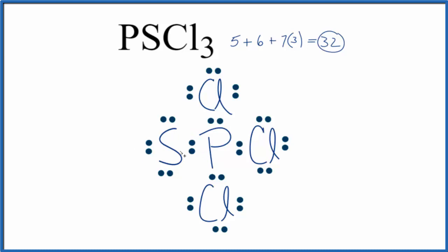But we should look at our formal charges. If we do that, we'll find the formal charge on the chlorines are all 0, but the sulfur is -1 and the phosphorus is +1. We'd like our formal charges to be as close to 0 as possible. If we move this pair of electrons here between the sulfur and the phosphorus, that'll make the formal charges on the sulfur and the phosphorus both 0.